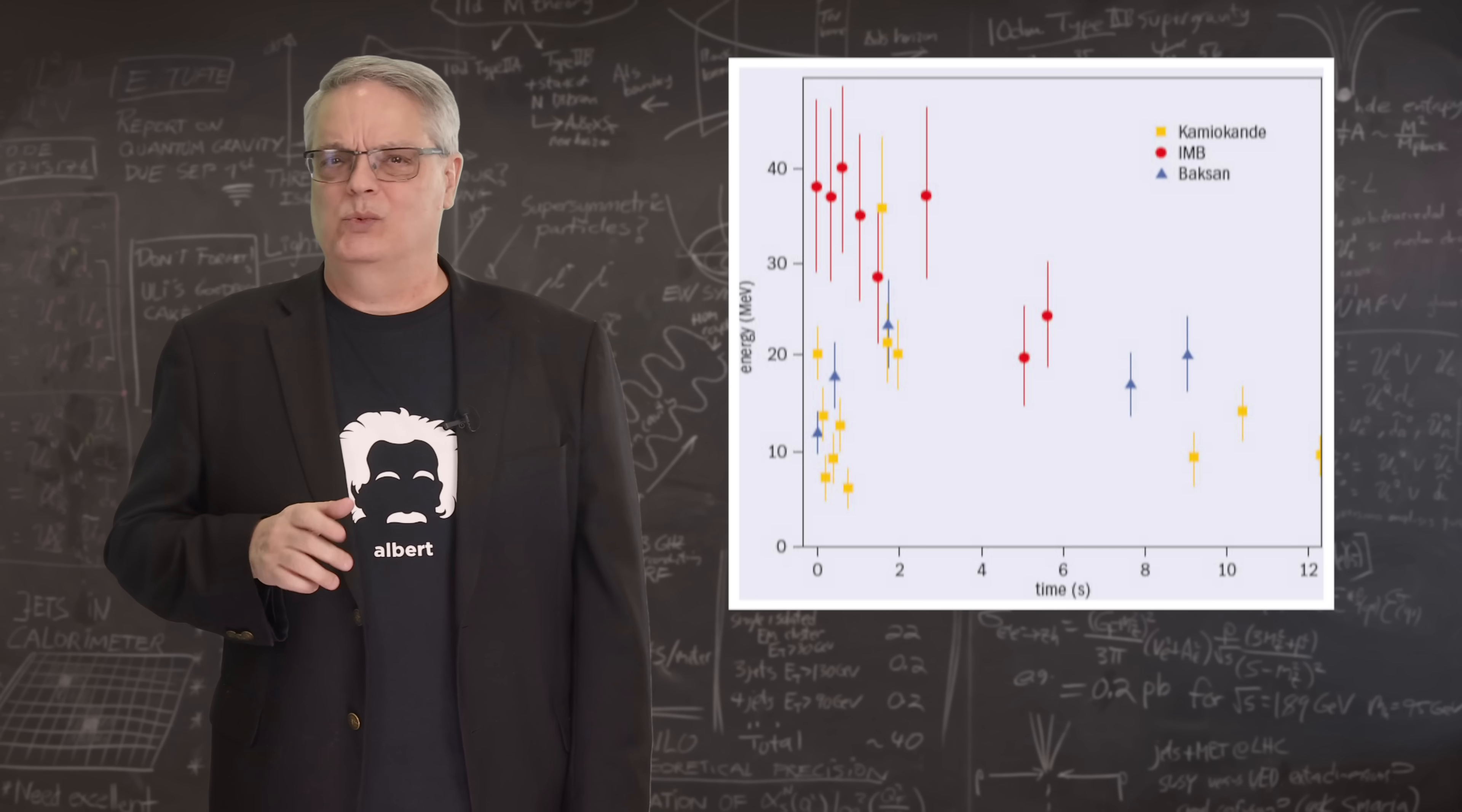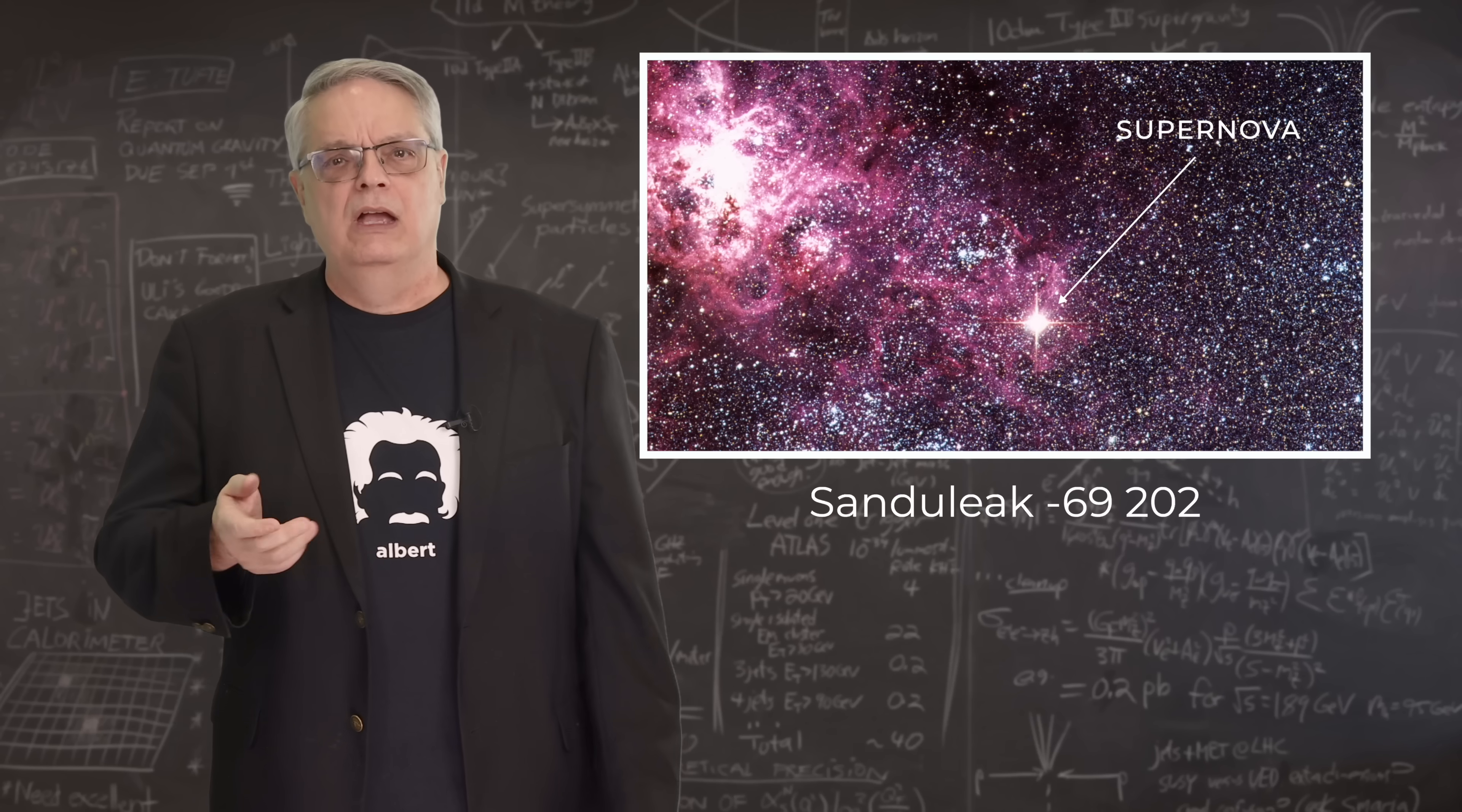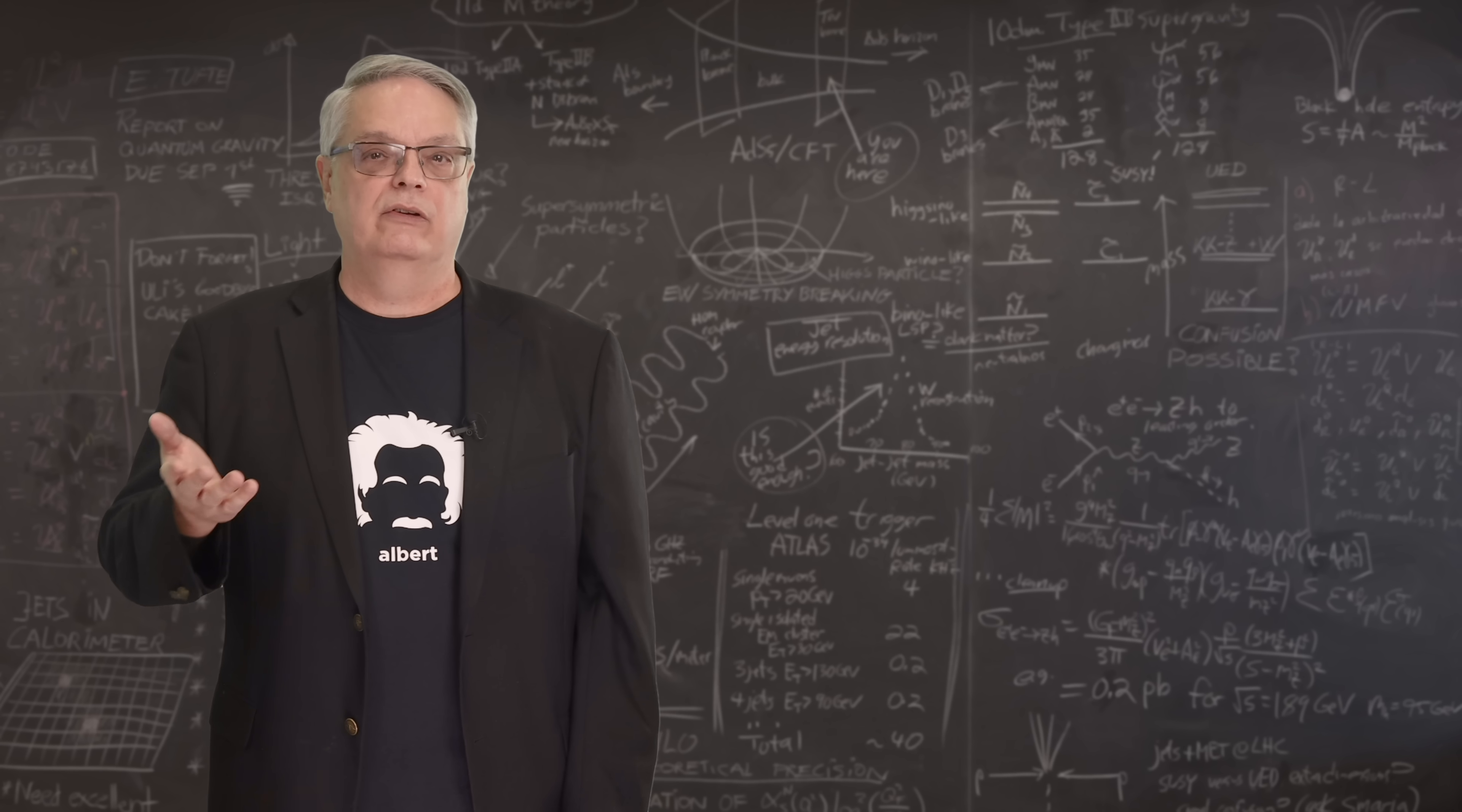That might not sound like a lot, but it was way more than usual. And, a couple of hours later, optical telescopes observed a supernova located in the Large Magellanic Cloud, which is a small satellite galaxy of the Milky Way located about 160,000 light years away from Earth. Astronomers eventually identified the progenitor star as a super blue giant called Sanduleak minus 69202. This observation of neutrinos was the first, and thus far only, direct observation of neutrinos from a supernova. The supernova is also the closest one to have occurred since the invention of the telescope.